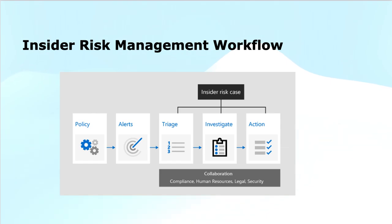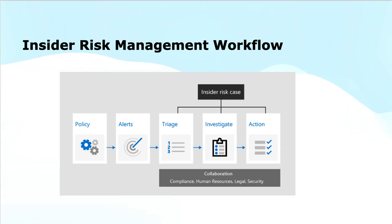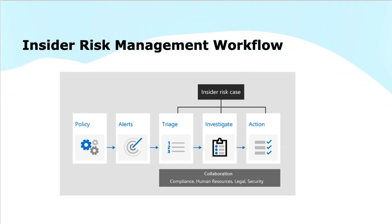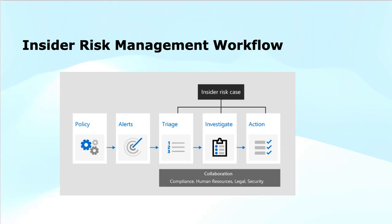These policies determine the criteria that trigger alerts. Alerts are generated once the policy is in place and an action or behavior triggers a risk indicator. Alerts are notifications that something suspicious or unusual has happened and might need further investigation. For example, if an employee tries to download a large volume of sensitive data or access files they shouldn't, the system generates an alert, providing early warnings to security teams or administrators.